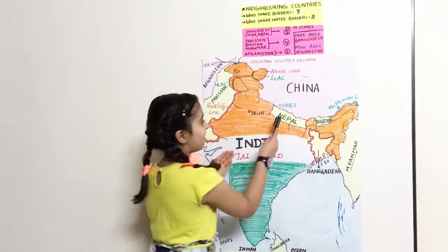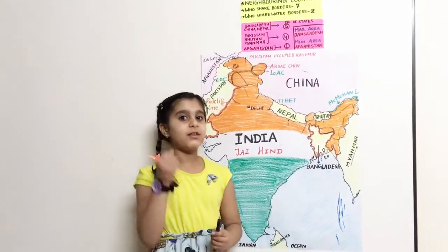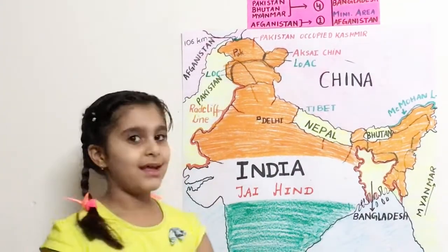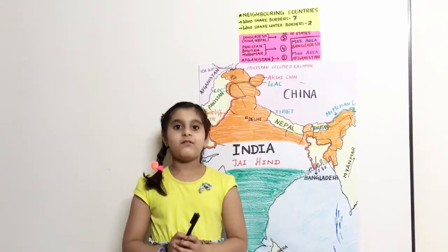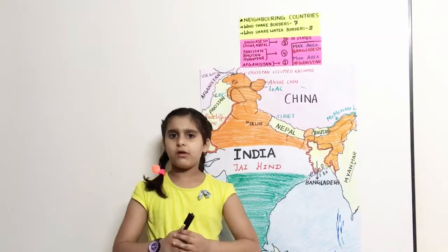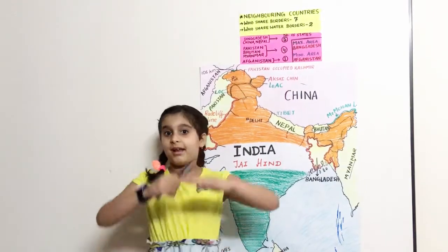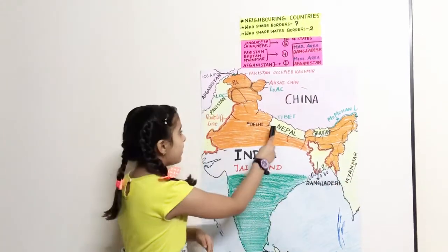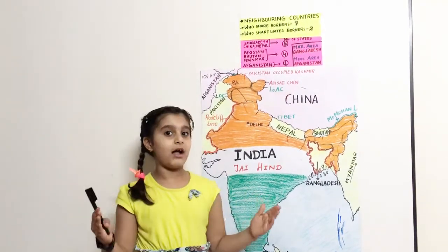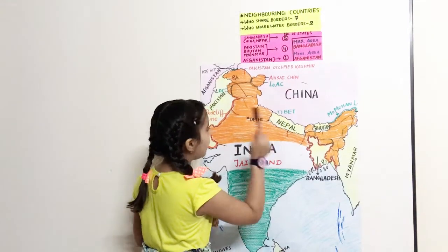Next neighboring country is Nepal. The capital of Nepal is Kathmandu. It shares a boundary with five states which are Uttarakhand, Uttar Pradesh, Bihar, West Bengal and Sikkim. It shares an open international boundary with India. It includes Himalayan territories as well as the Indo-Gangetic plains — also called the Indus Ganga plain — which is a large fertile land in the northern region of India. Nepal shares the largest border with Uttar Pradesh.